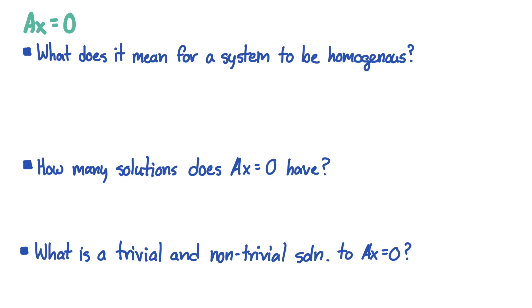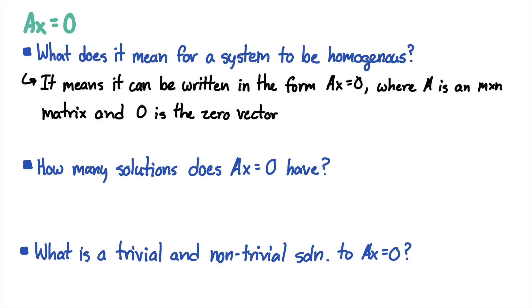So what does it mean for a system to be homogeneous? It means it can be written in the form AX equals 0, where A is an m by n matrix and 0 is the zero vector.